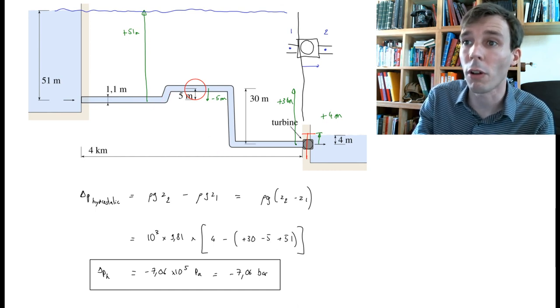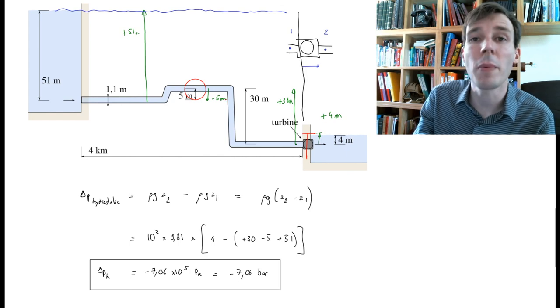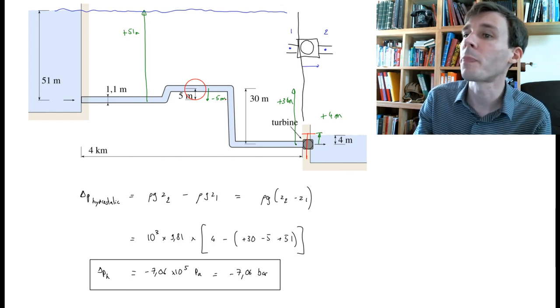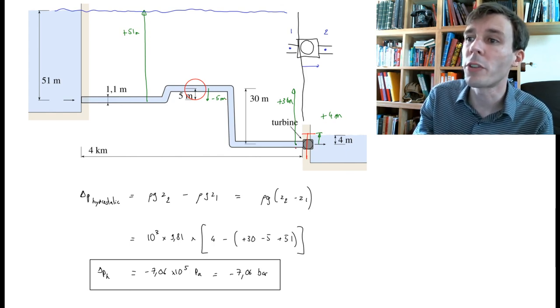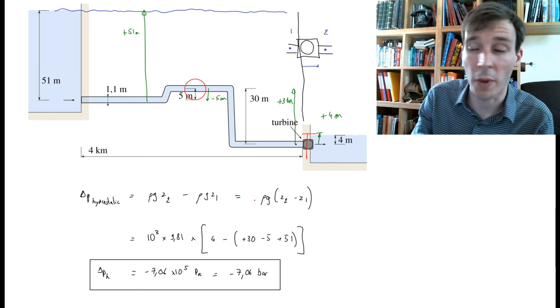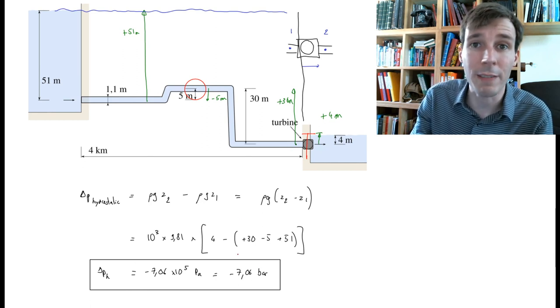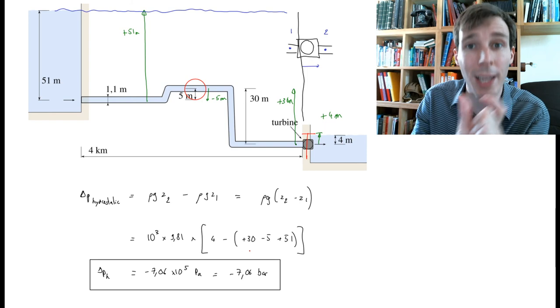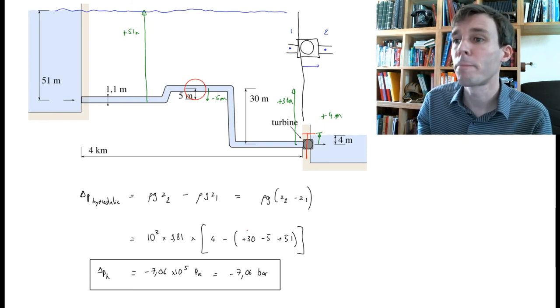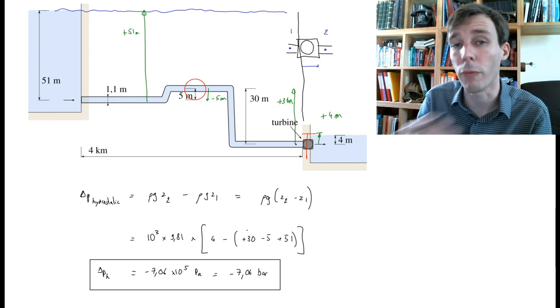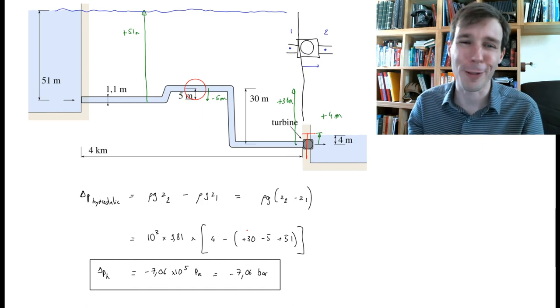We will have pressure losses due to the bends in the pipe and due to wall friction. So the pressure difference available to the turbine, which at the moment is 7 bar, will be less. Calculating these losses due to flow is the topic of another video.